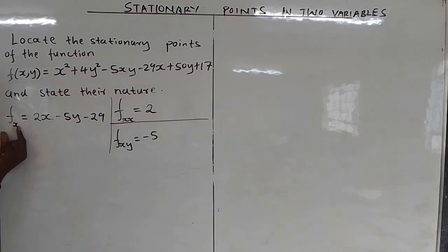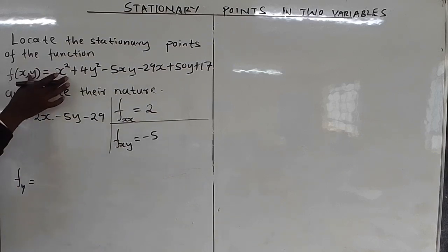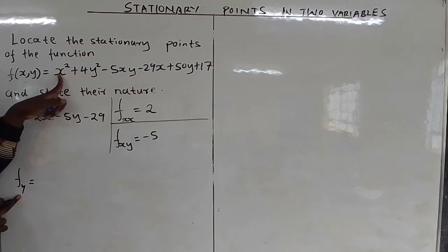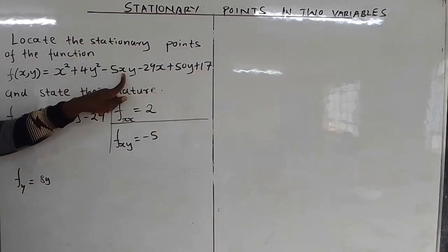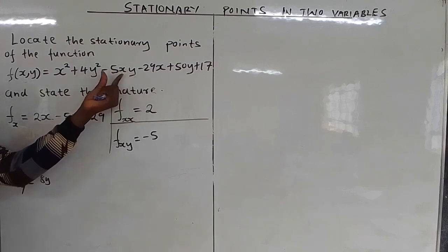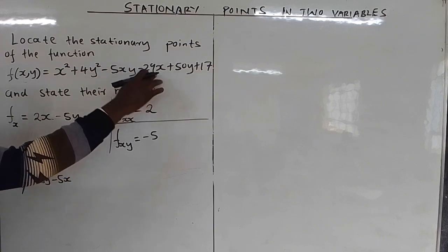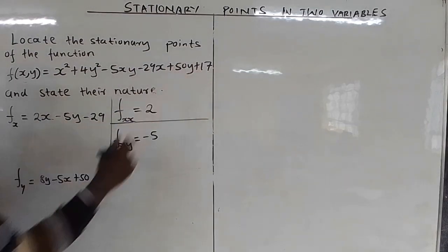Now what if we start by differentiating the function partially with respect to y? In this case, only y is a variable and anything else is a constant. So x² is a constant giving 0. For 4y² partially with respect to y you get 8y. For -5xy, -5x is a constant, differentiating y gives 1, so you get -5x. For -29x there is no y, giving 0. For 50y you get +50, and differentiating the constant 17 gives 0. So ∂f/∂y = 8y - 5x + 50.